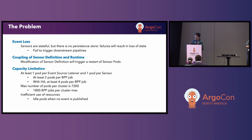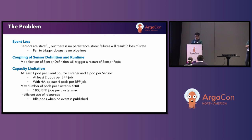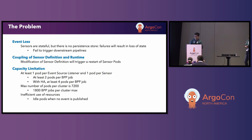First, the version of Argo events we were using was still using NATS Streaming, and the NATS Streaming version does not have a persistent store. So whenever we needed to change the definition of a sensor, it would always result in a restart of the pod. When the pod restarted, we experienced data loss or state loss, and because of the state loss, we were not able to trigger the downstream pipelines. Also, the sensor definitions and the sensor runtime specifications are coupled into a single sensor specification. So when there is a change in the pipeline requirements, we have to modify the sensor definition, which triggers a restart of the sensor pod and again causes state loss.